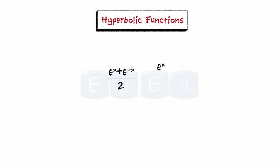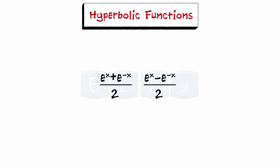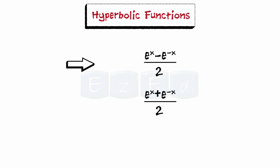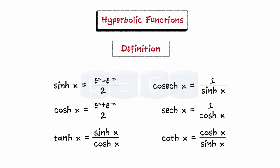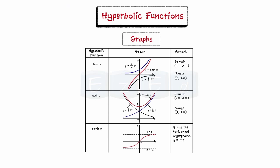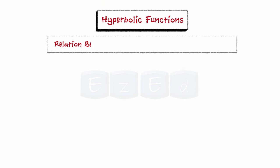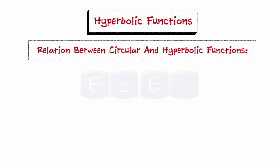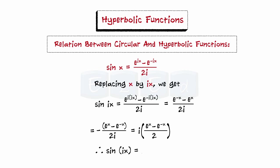What functions are these? These functions are called hyperbolic functions. The first one is the hyperbolic sine, pronounced as 'sinh', while the second is hyperbolic cosine, pronounced as 'cosh'. We define all the hyperbolic functions as shown, and look at the graphs of sinh, cosh, and tanh. We know that sin x = (e^(ix) − e^(−ix)) / 2i. Replacing x by ix and simplifying, we get sin(ix) = i·sinh(x).